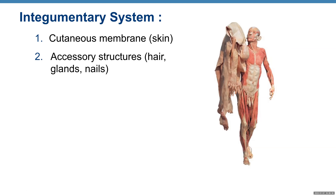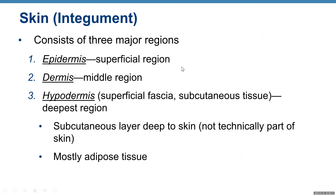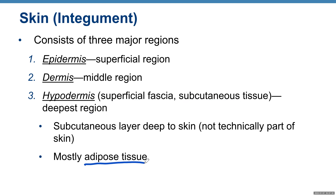The integumentary system is made of your skin, the major organ, which is a cutaneous membrane, plus accessory structures or accessory organs including hair, glands, and nails. Skin or integument consists of three major regions: epidermis (the superficial region), dermis (the middle region), and hypodermis, which is technically not part of skin but shares some structures and functions. Other names for hypodermis are superficial fascia or subcutaneous tissue. It is the deepest region and is mostly adipose tissue.